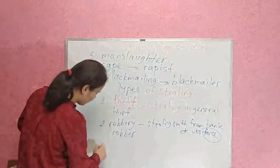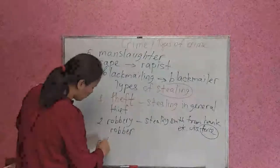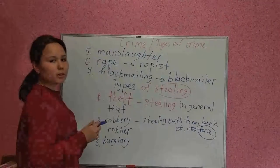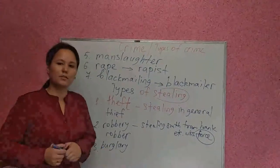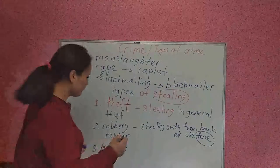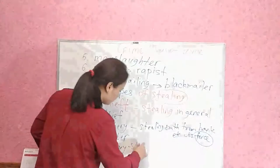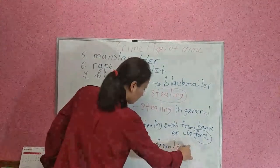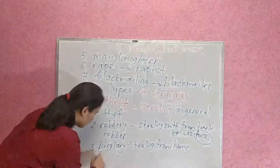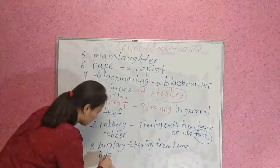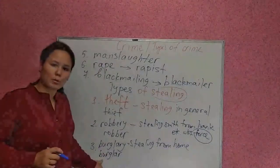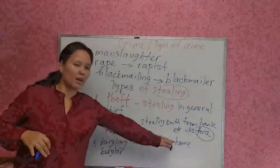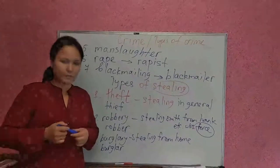Number three is burglary. Burglary is also about stealing, but this is stealing from someone's home. Burglars — that's the way we call the criminal — a person who commits a burglary. Burglars break into a home, into a house, in order to steal something.